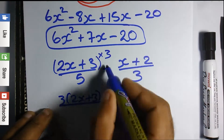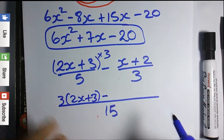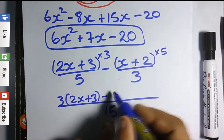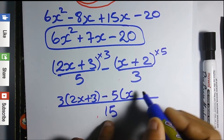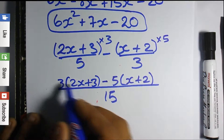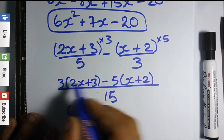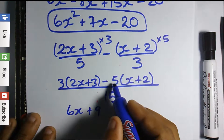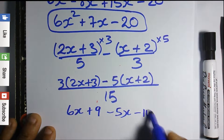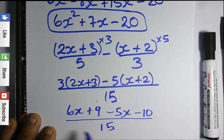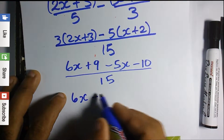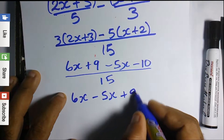We bring down the minus sign that separates the fractions. Then 3 into 15 goes 5, so we multiply the numerator by 5: that's 5 times (x + 2). Applying the distributive law to expand the brackets: 3 times 2x is 6x, 3 times 3 is 9, minus 5 times x is minus 5x, minus 5 times 2 is minus 10, all over 15. Then we collect like terms: 6x minus 5x plus 9 minus 10, all over 15.